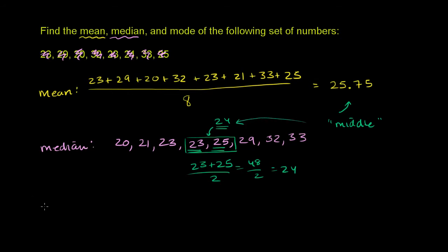Then finally, we can think about the mode. And the mode is just the number that shows up the most in this data set. And all of these numbers show up once, except we have the 23. It shows up twice. And so because 23 shows up the most, it shows up twice. Every other number only shows up once. 23 is our mode.